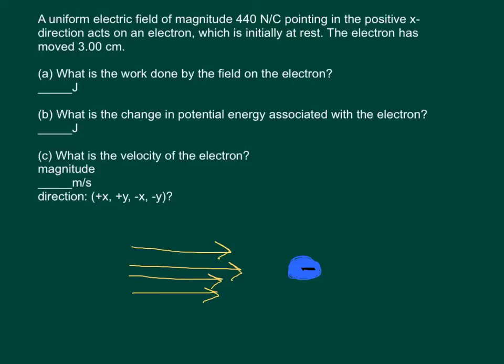So we have this uniform electric field along the positive x axis. The direction it points indicates the direction that a positive charge would move if placed in the field. So the direction a negative charge would move is always opposite to the direction of the arrows. So we can already answer the second part of part C — the electron will move in the negative x direction.